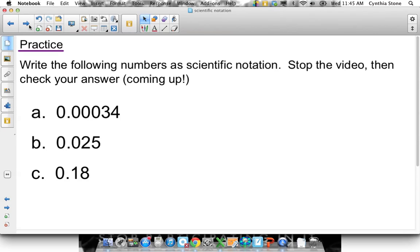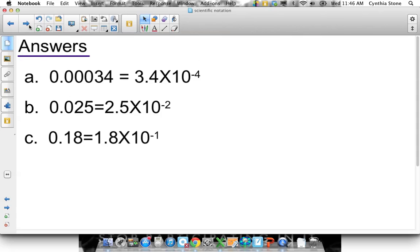So just practice it up. Write these questions, write these numbers out. Write them out as scientific notation. And pause the tape. Try them. I'm going to move on. And here's the answers. Just to remind you, negative 4, why? Well, 1, 2, 3, 4 zeros. Negative 2, 1, 2 zeros. Negative 1, 1 zero. Okay?